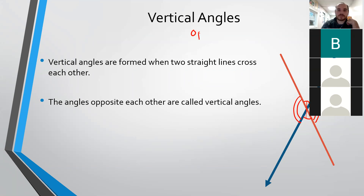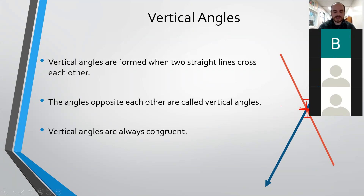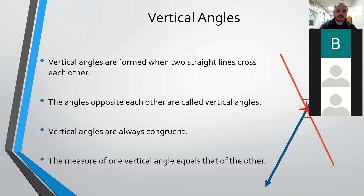Vertical angles are sometimes also called opposite angles. Vertical angles are always congruent, so the angles opposite each other — assuming these are straight lines, which in this case they are — these angles are always congruent. That means the measure of one vertical angle equals that of the other. So if this angle is 30 degrees, that means this angle is also 30 degrees. If this angle is 150 degrees, that means this angle is also 150 degrees.